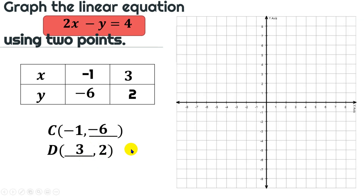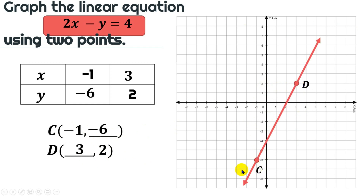Now let's plot the points. For (-1, -6): negative 1 on the x-axis and negative 6 on the y-axis — plot point C there. For (3, 2): find 3 on the x-axis and positive 2 on the y-axis — plot point D there. Using a ruler, connect these two points. This is our line for the linear equation 2x - y = 4.